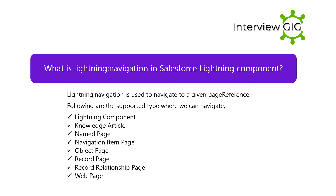What is Lightning Navigation in Salesforce Lightning Component? Lightning Navigation is used to navigate to a given page reference. The supported types where we can navigate include: Lightning Component, Knowledge Article, Named Page, Navigation Item Page, Object Page, Record Page, Record Relationship Page, and Web Page.